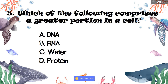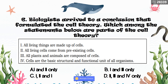Number six: Which of the following statements are parts of the cell theory? 1. All living things are made up of cells. 2. All living cells come from pre-existing cells. 3. All plants and animals are composed of cells. 4. Cells are the basic structural and functional unit of all organisms. Is it A. One and two only? B. One and three only? C. One, two, and three? D. Two, three, and four only? The correct answer is letter C — one, two, and three.